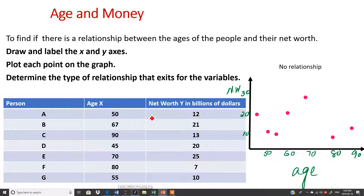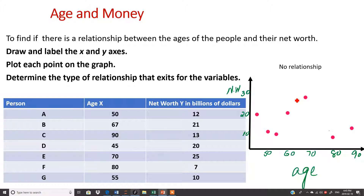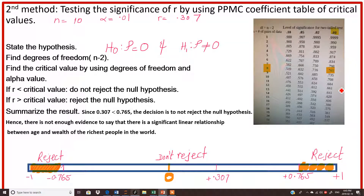One more example: age and net worth. We have 10 observations — this is age and this is net worth. Looking at the graph, you can say there is no relationship, as the points do not form a line. But let us prove it with hypothesis testing using the PPMC — the Pearson Product Moment Correlation table. For this question, alpha is 0.01, r = 0.307, and N = 10.